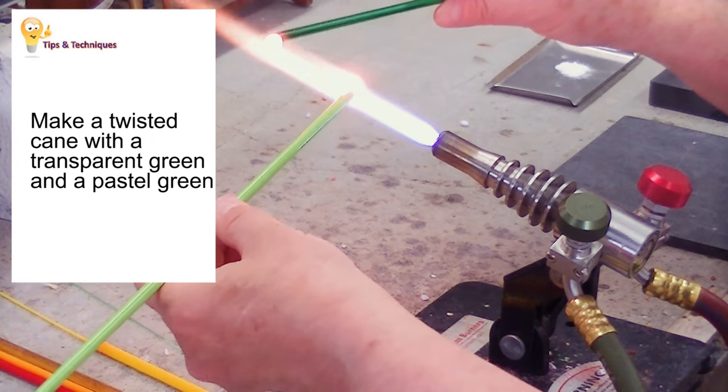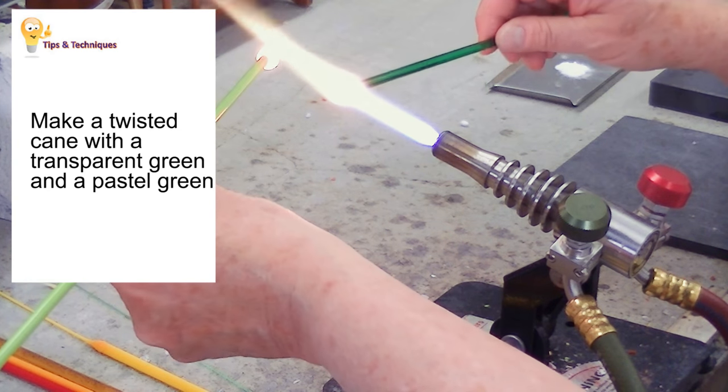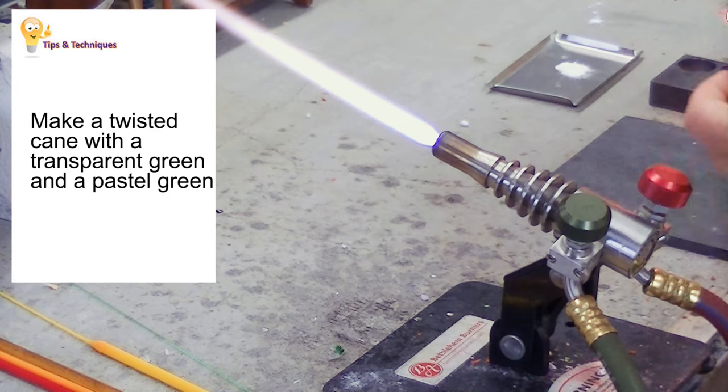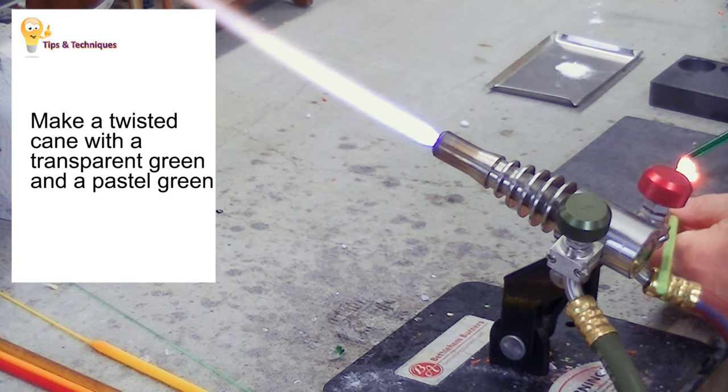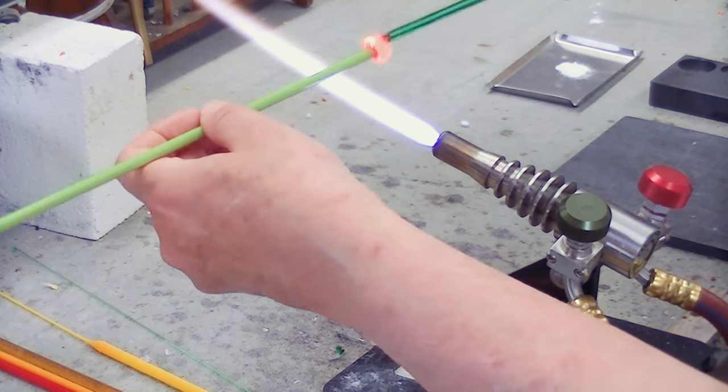Now I'm using two different colors of green. One is a transparent green, and one is a pastel green. I'm going to create a twisted stringer, or a twisted cane. I'm making a little glass sandwich here out of the two colors of glass.